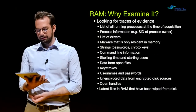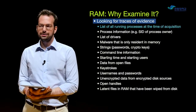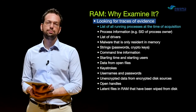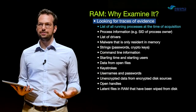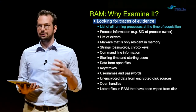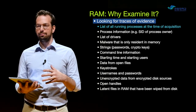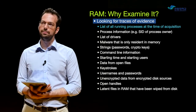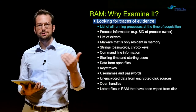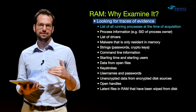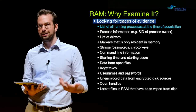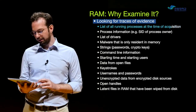Looking for traces of evidence in RAM: these could be things like lists of all running processes — everything that's running — and we can potentially recover that list. That's really useful, for example, for malware analysis. Sometimes malware attempts to hide its processes, but if we can recover or get a copy of RAM, we can potentially recover all of the processes that are currently running.